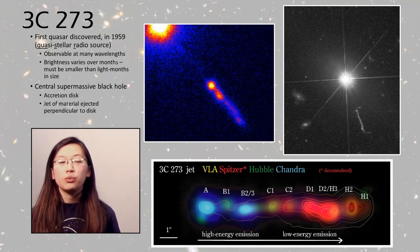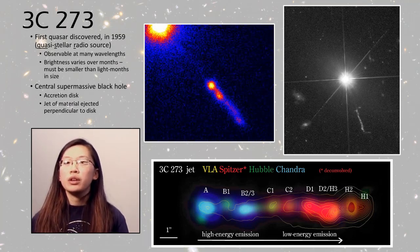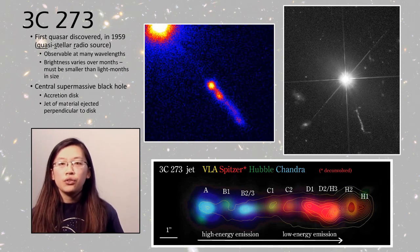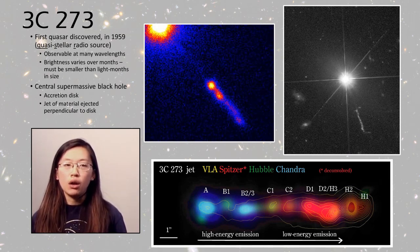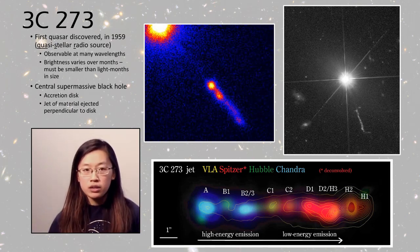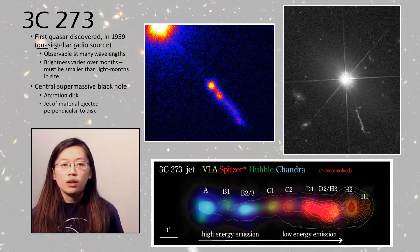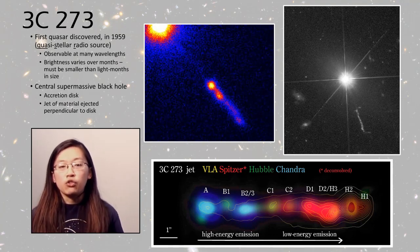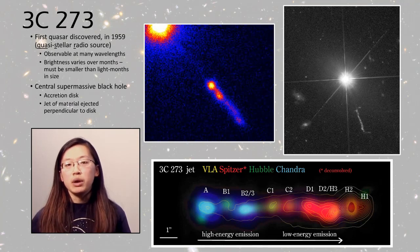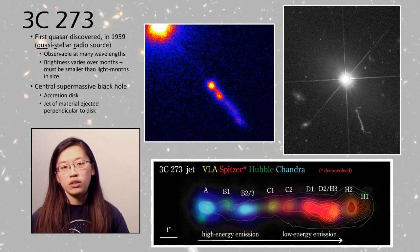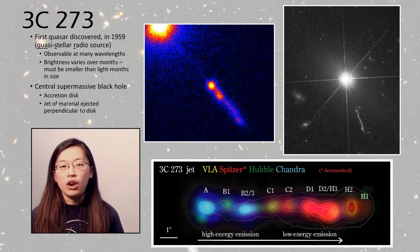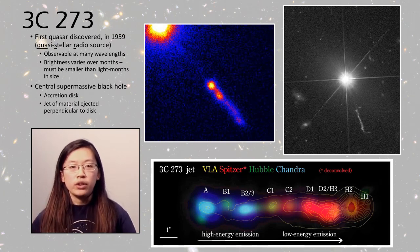Let's start with our first DSO: 3C273. It was the first quasar discovered in 1959, first found in the radio, which is why quasar is short for quasi-stellar radio source. It's observable at many wavelengths — we can see it up through and including the X-ray — and its brightness varies over the course of months. This led astronomers to theorize that whatever produces a quasar must be smaller than light months in size. We now think most quasars are a supermassive black hole at the center of a galaxy, surrounded by an accretion disk of very hot material, sometimes ejecting a jet perpendicular to this disk.